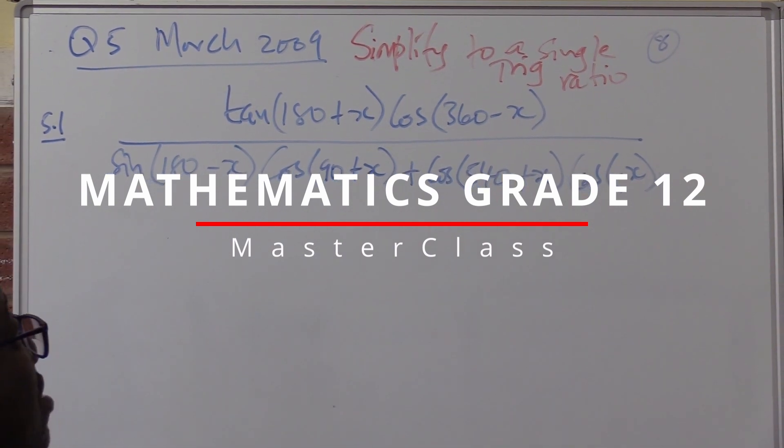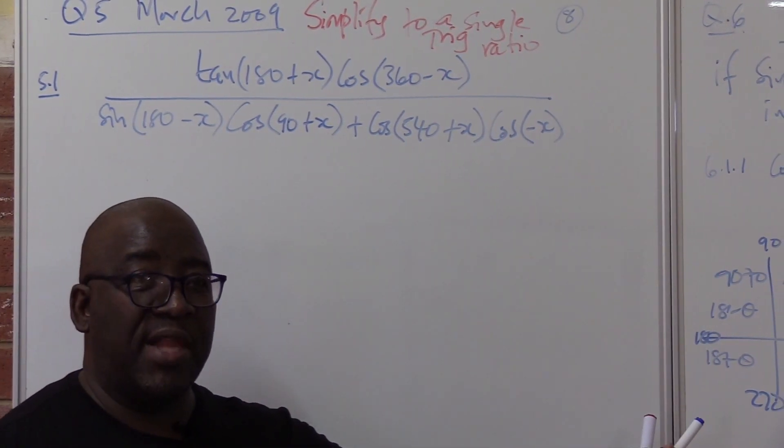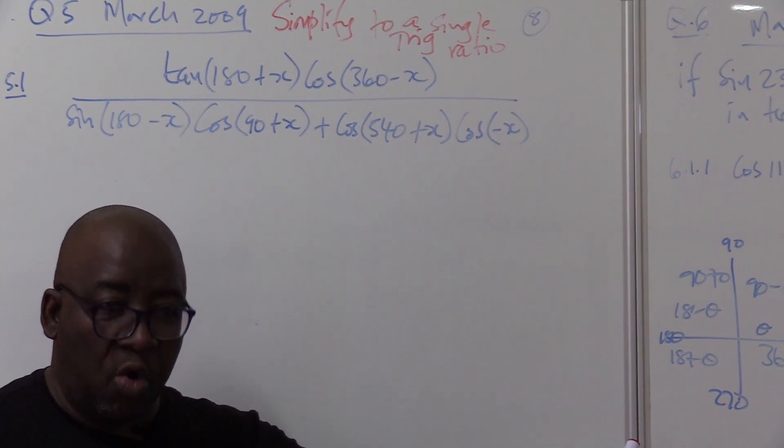Remember, we still use the same building blocks that we started with. If you look at the Cartesian plane, where is 90? It is on top. Where is 27? It is down.